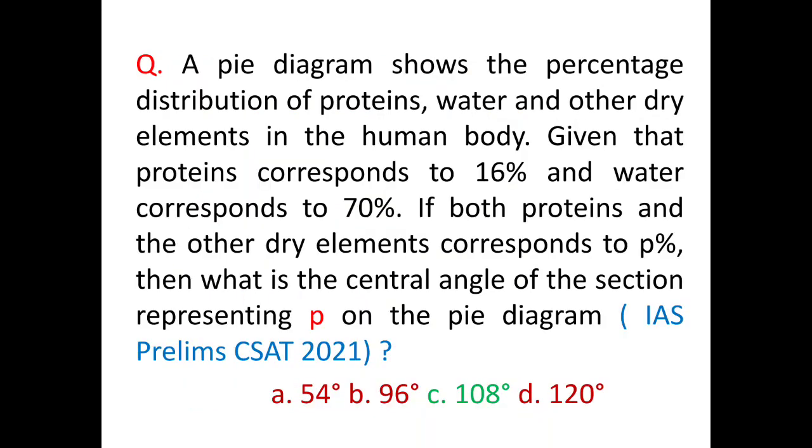Now the question is shown. The question reads that a diagram shows percentage distribution of proteins, water and other dry elements in human body. Now proteins are 16%, water is 70%, and both proteins and other dry elements are P%. So what is the angle contained by P?